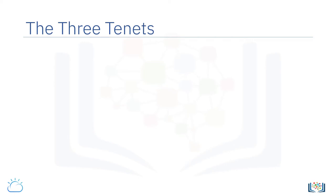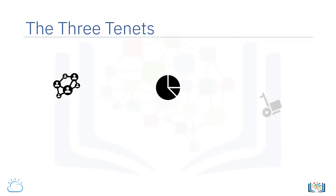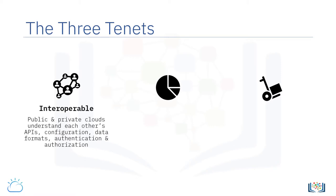The key tenets of a hybrid cloud are interoperability, scalability, and portability. Hybrid cloud is interoperable, which means that the public and private cloud services can understand each other's APIs, configuration, data formats, and forms of authentication and authorization.